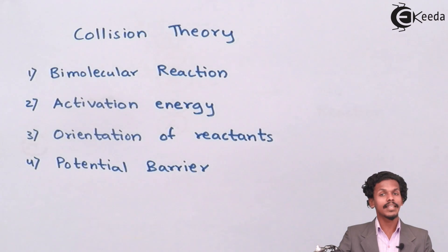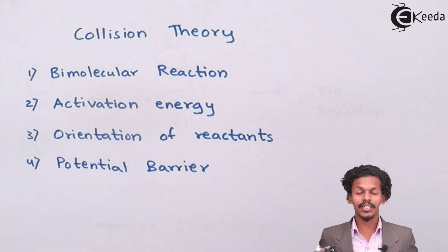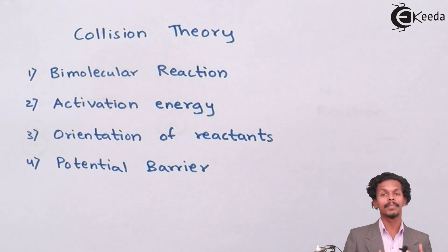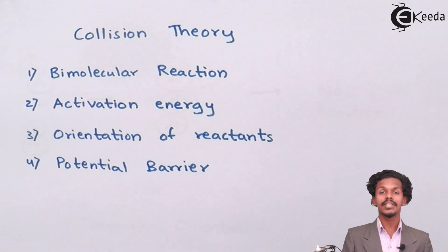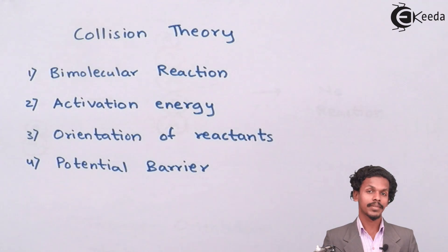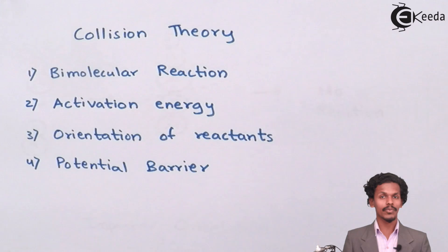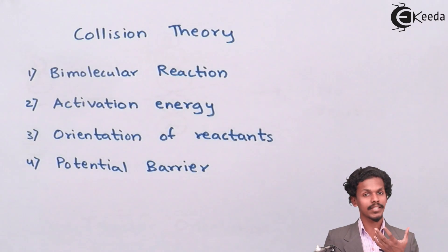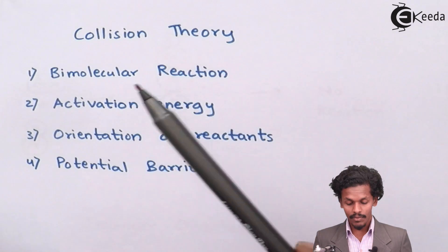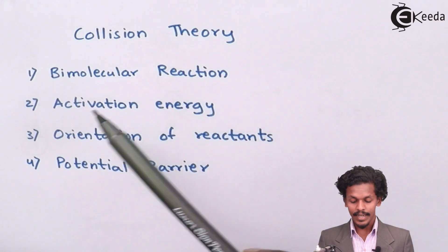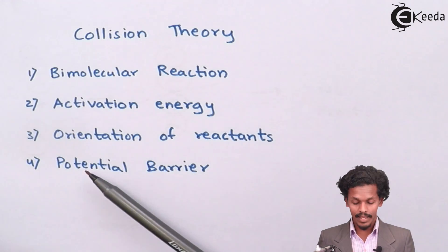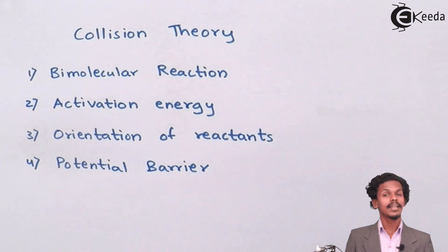In a bimolecular reaction, the reactants collide with each other to create a particular energy, which helps the reactant molecules gain activation energy, converting the reactants into the product. The factors based on collision theory are: first, it only occurs in a bimolecular reaction; second, activation energy is required; third, the orientation of the reactant molecules must be correct; and fourth, the potential barrier must be crossed by the reactant molecules.